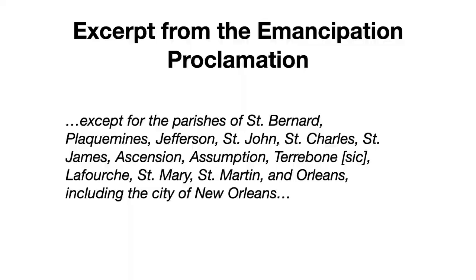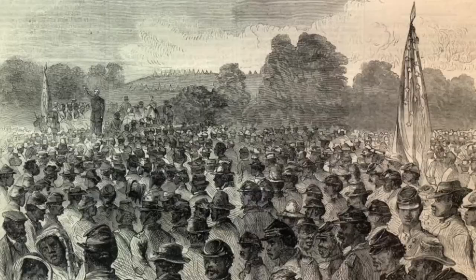For the enslaved African Americans in St. Mary and St. Martin parishes, Union forces were not actually there to free them — in fact, they couldn't emancipate the enslaved people even if they wanted to, as it was technically illegal. The Emancipation Proclamation specifically exempted those parishes because at the time of its issue, portions of both parishes were under Union control, meaning they legally were not in rebellion against the United States.